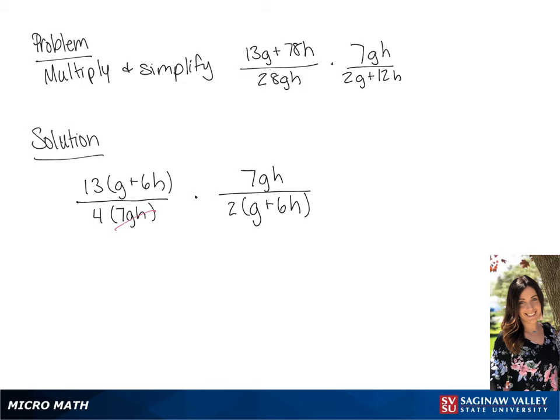Now we can simplify. And if we multiply across we are going to get a final answer of 13 over 8.